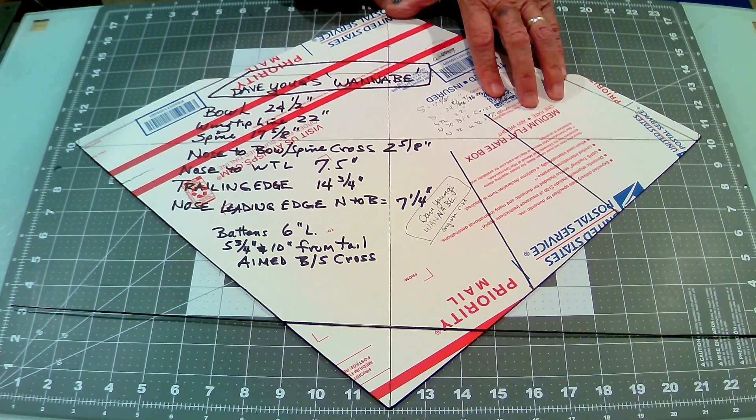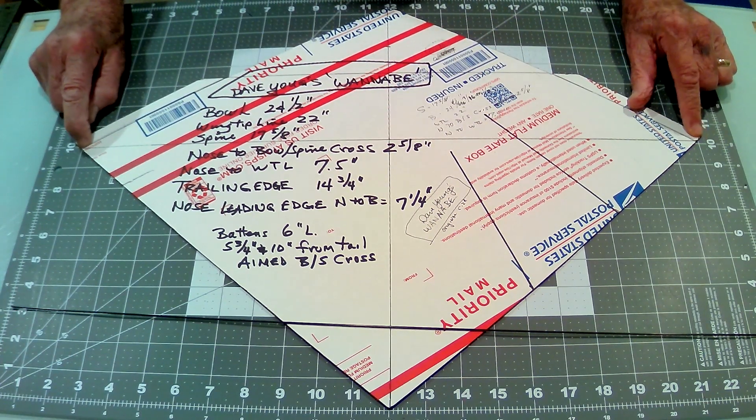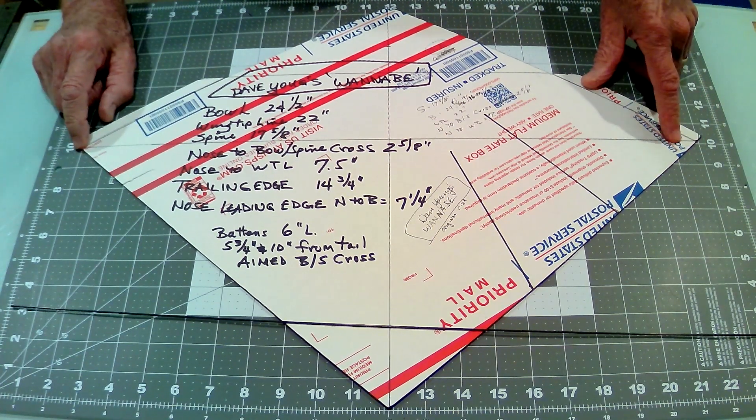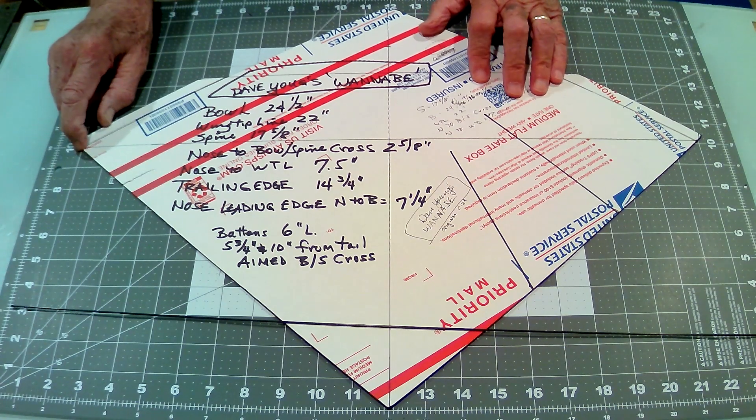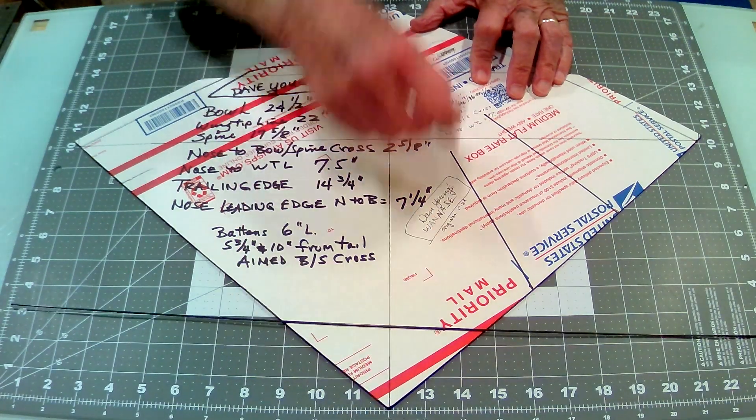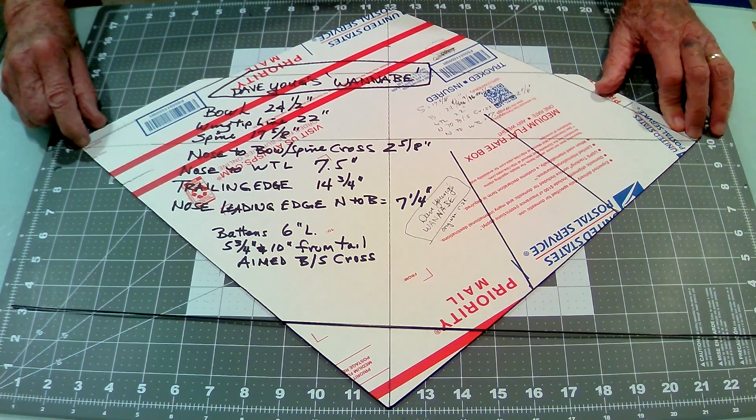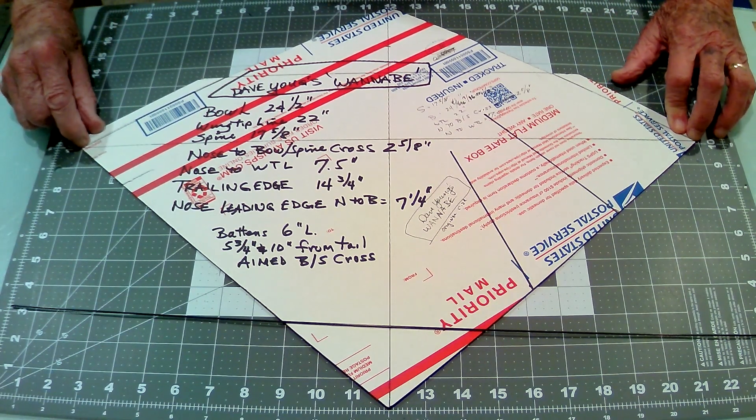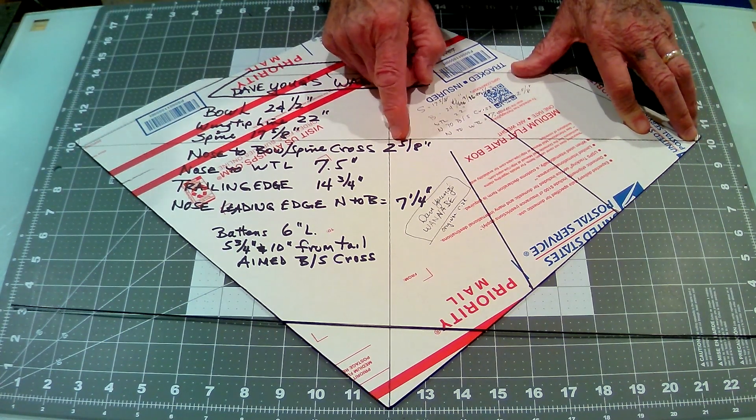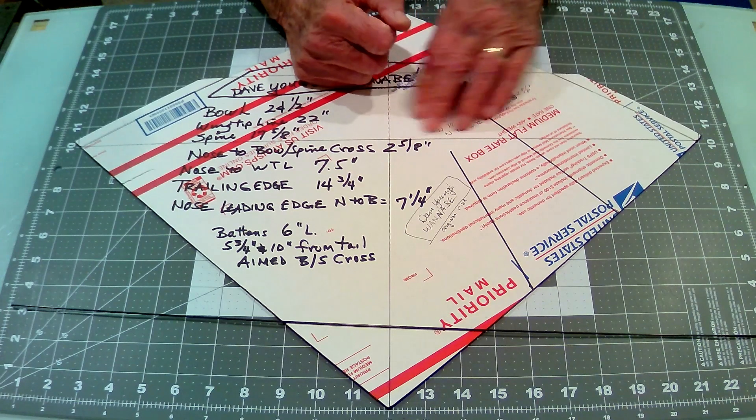And you measure down from the nose, 7 and a half inches, and then you draw this line perpendicular to the spine, 22 inches long, 11 inches on each side of the spine. Now, the spine is 17 and 5 eighths inches from nose to tail. But if you make this, and you get this 22 inches, maybe it's not quite 22 inches, or maybe it's a little more than 22 inches, it may not be exact. But as long as it's exact from the spine to the right wingtip and the spine to the left wingtip, that's what's important.